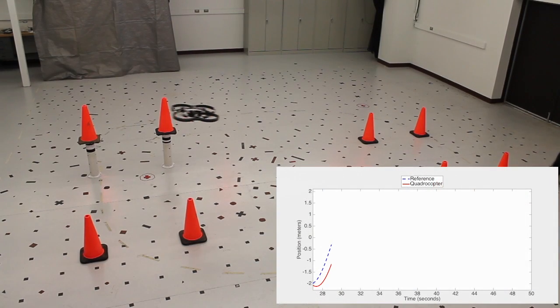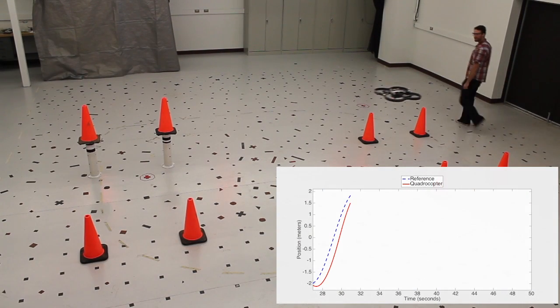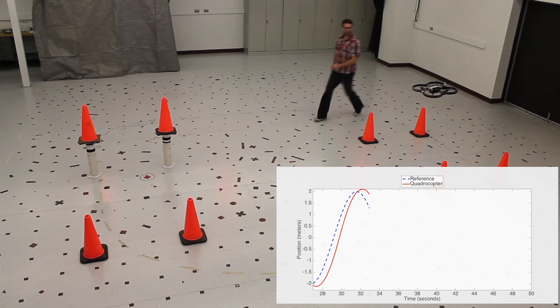What happens under unmodeled disturbances? Can the sequence of alternatingly reaching the right and left sides be maintained?